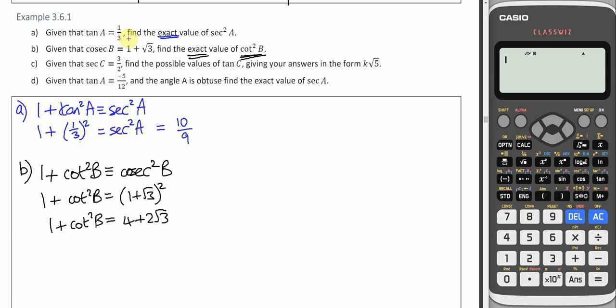I'm going to have to take 1 away from both sides and then just check. What do we want? We want cot squared B. So take 1 away from both sides. So it is 3 plus 2 root 3.